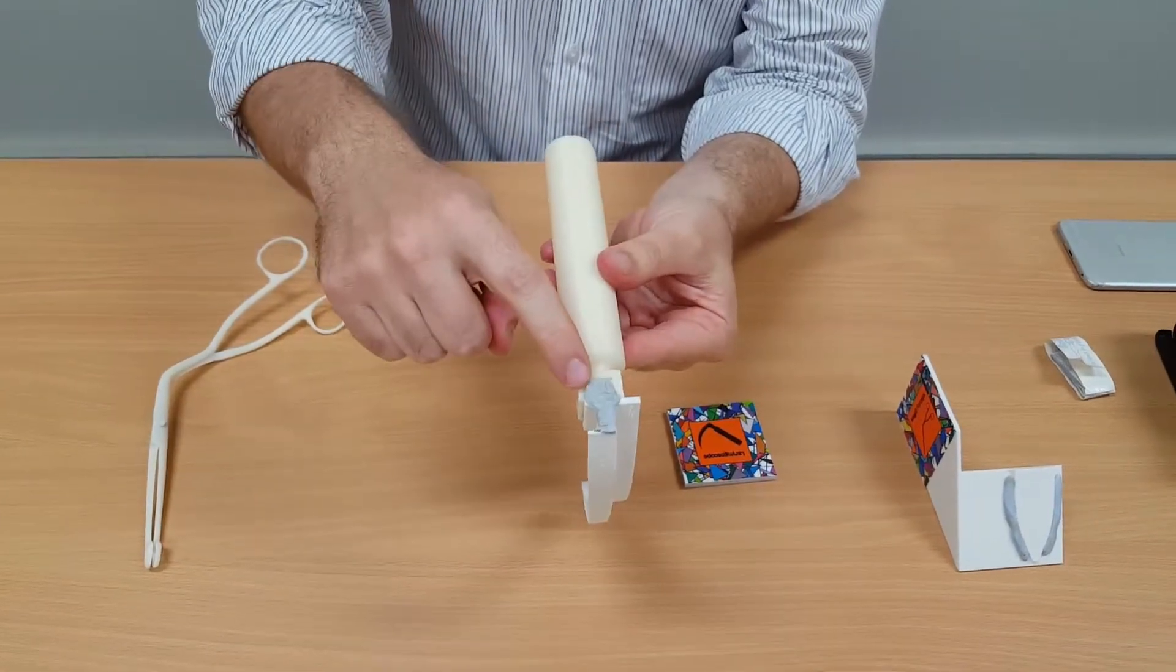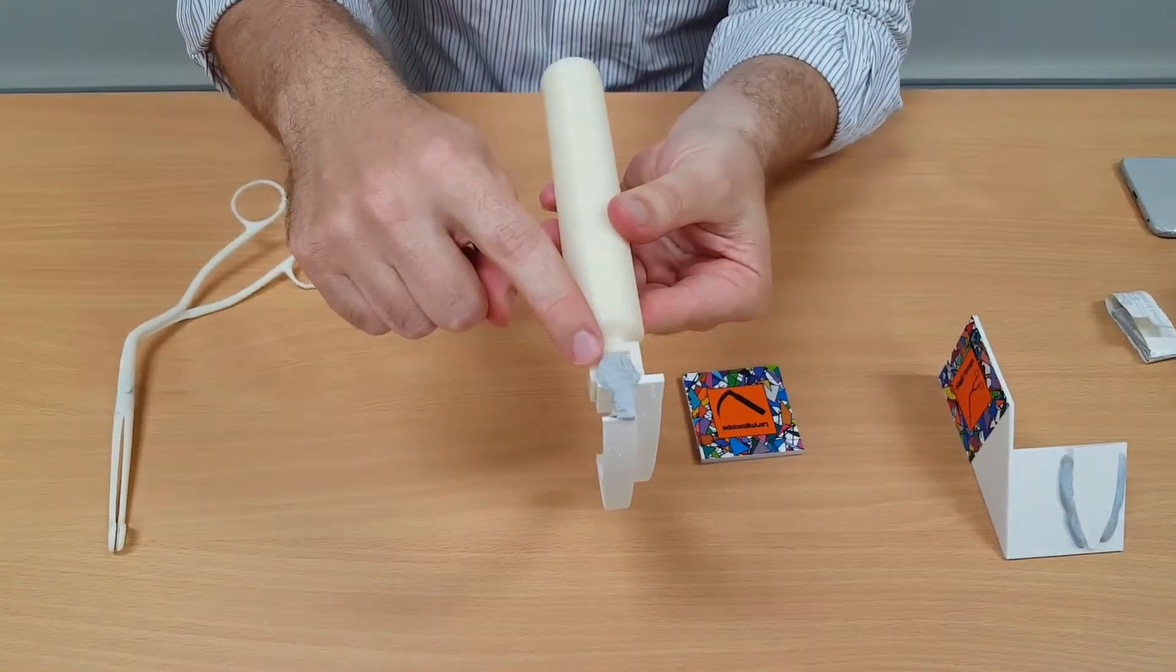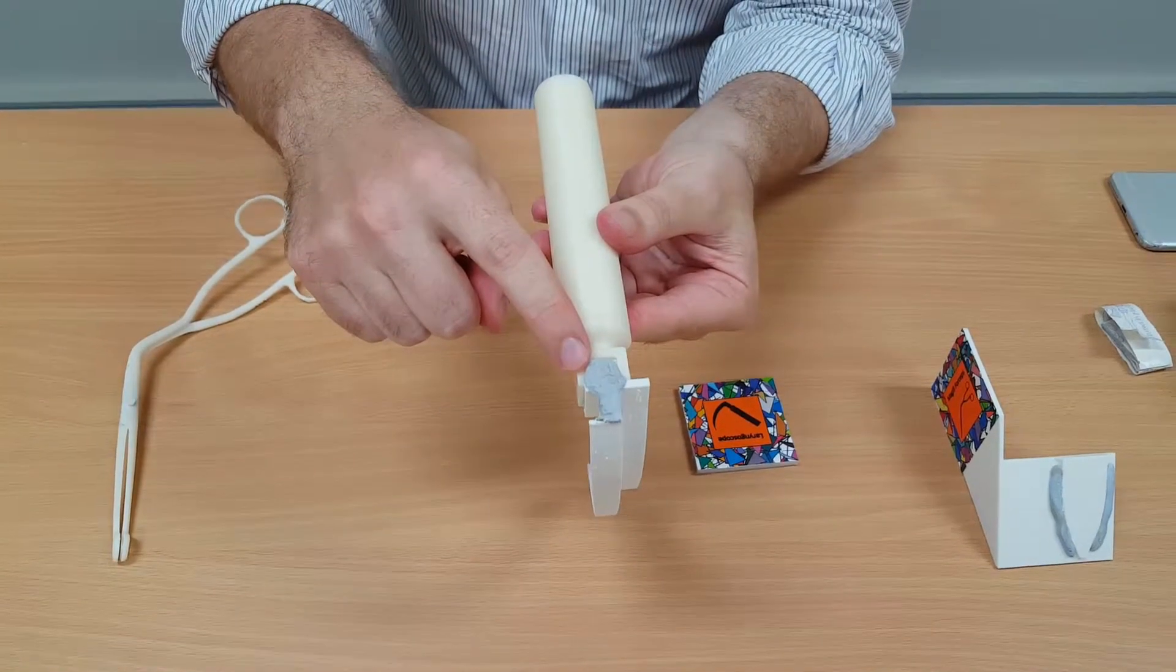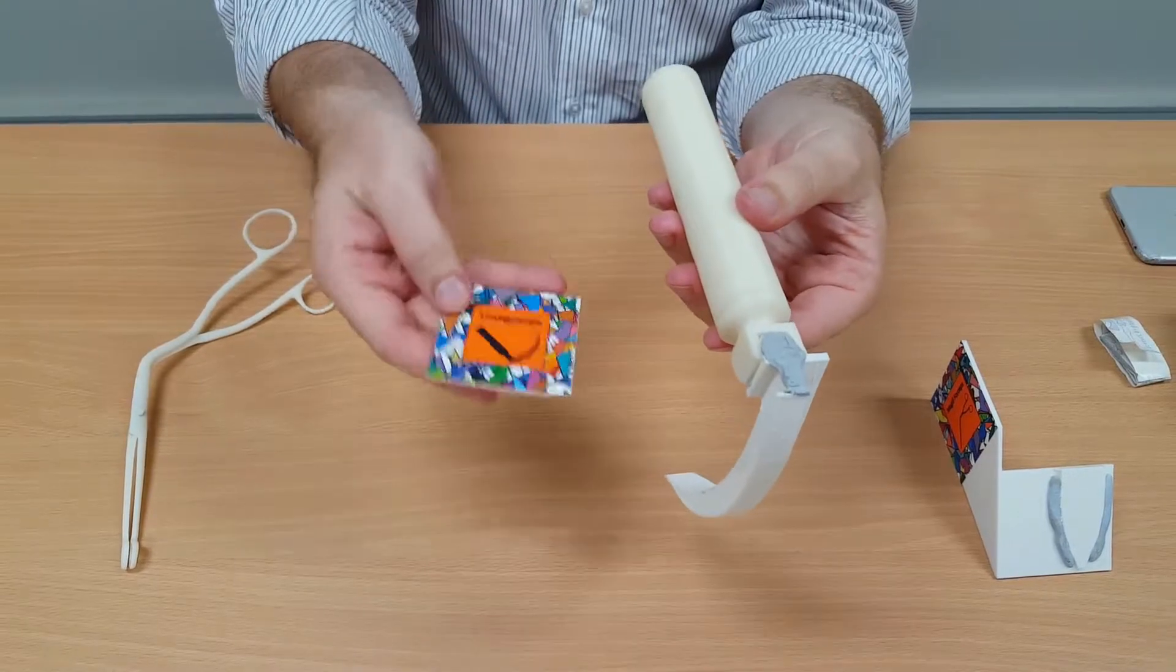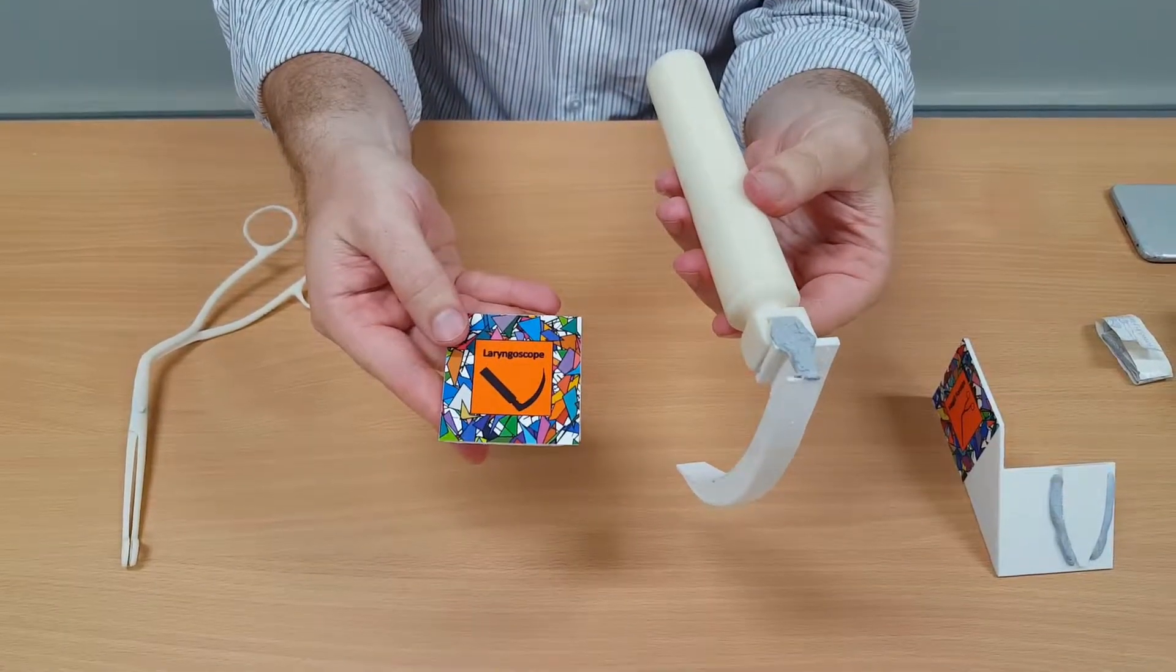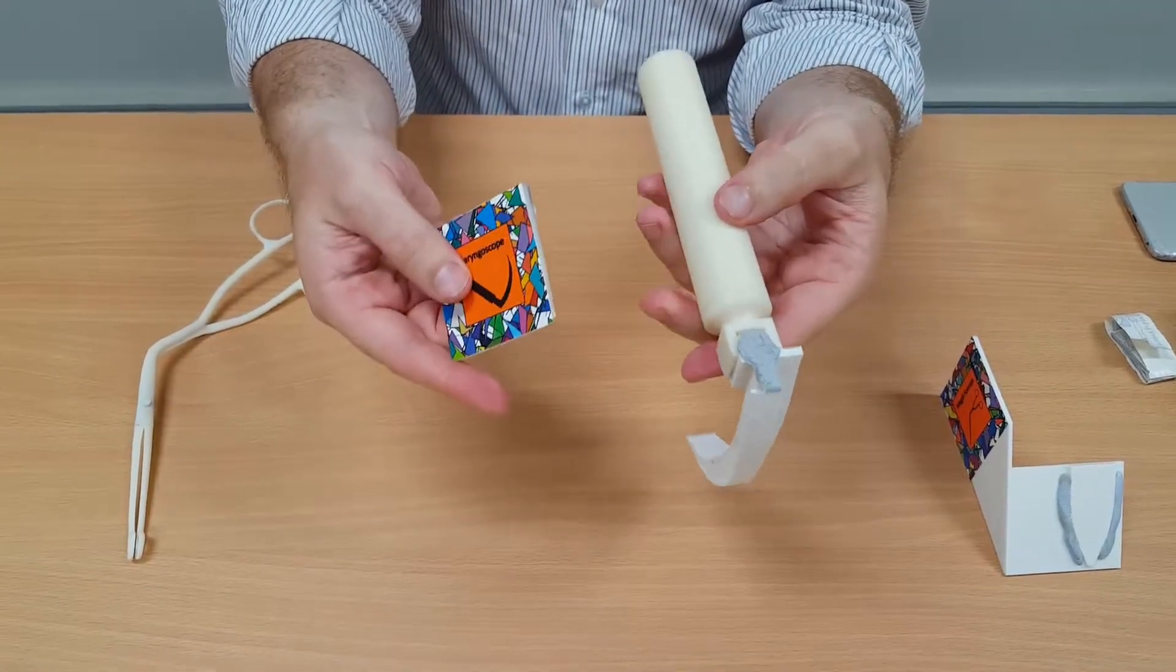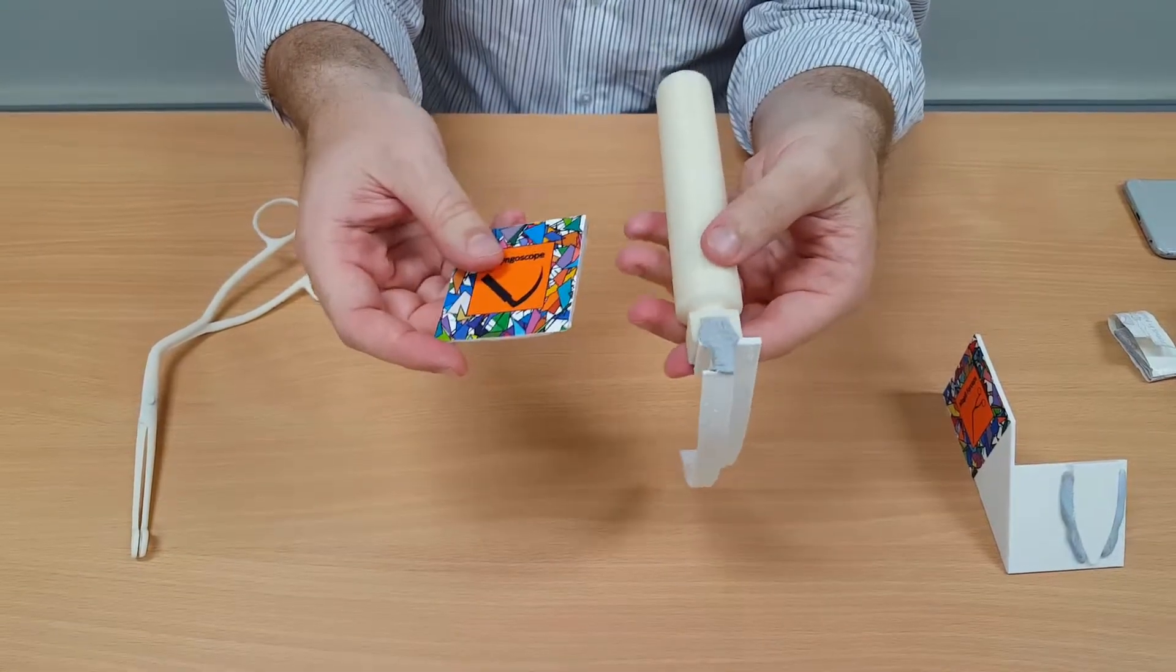You can see here that I've put some blue tack. You could also use double sided tape on the back of the blade to support the augmented reality marker. We now want to take the laryngoscope augmented reality marker and place this onto the back of the blade.